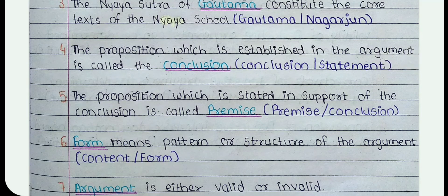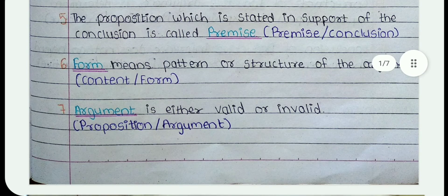4. The proposition which is established in the argument is called Dash. The answer is Conclusion. 5. The proposition which is stated in support of the conclusion is called Dash. The answer is Premise. 6. Dash means pattern or structure of the argument. The answer is Form.